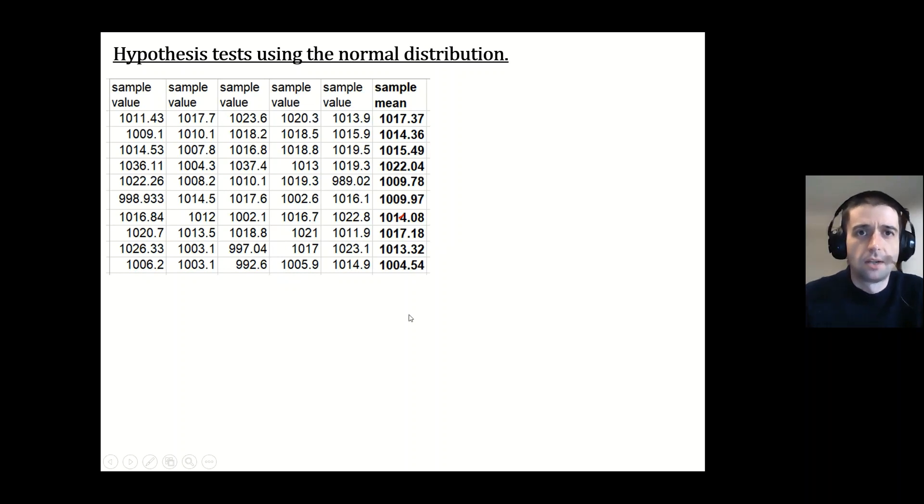Now, what I've done is I've asked for samples of size five. So I've got five values. And for each of these, I've worked out the sample mean. And it's the sample mean that we're interested in, because what would happen is if we did lots and lots of these samples, then the mean, if we took the mean of all these samples, for example, taking the mean of these 10 numbers in bold here, then that mean would be quite close to the mean of the normal distribution.